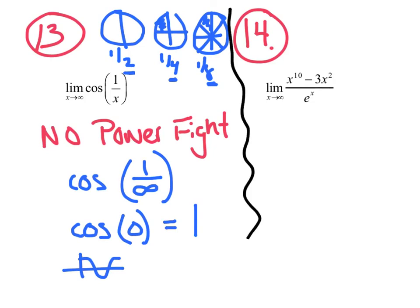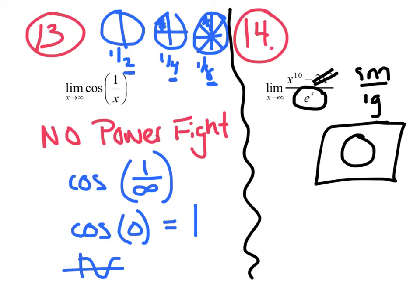The last one: the limit as x approaches infinity. Who's larger — the polynomial or the exponential? By definition, exponentials are a fast-growing function. So we have small over large, which of course is zero. Make a note: the exponential is our fastest-growing function.